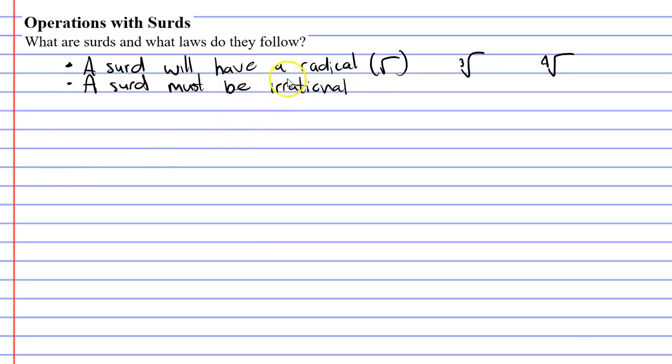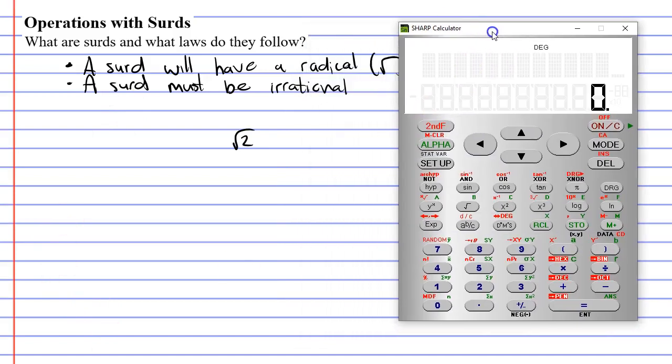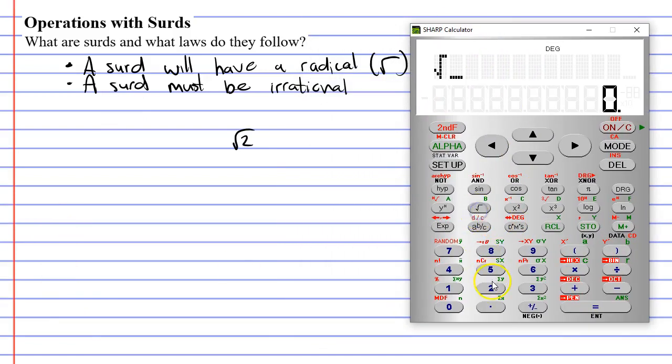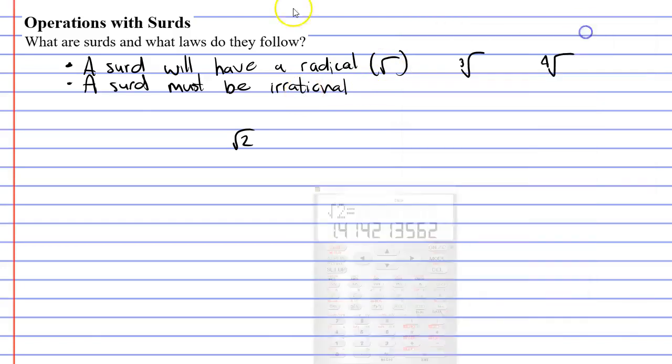In case you don't know what an irrational number is, it's basically where you have a decimal that goes on forever and has no recurring pattern. So we'll look at some examples. Let's start with the square root of two. Bringing up our calculator, the square root of two is an irrational number. It has a decimal that goes on forever and there's no recurring pattern. So since this has a radical and is irrational, we can state that this is a surd.